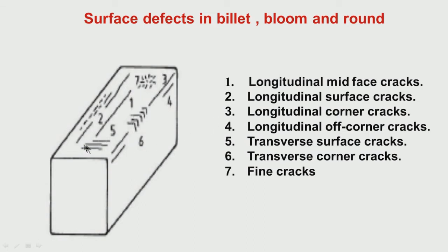Look at crack 5: what is the direction? If 1 was longitudinal, 5 is transverse — it is perpendicular, at about 90 degrees to the longitudinal direction. The longitudinal direction is the direction of casting; the transverse direction is perpendicular to it. So crack 5 is called a transverse surface crack — it is on the surface but at transverse direction. Look at crack 6: these are also transverse direction cracks but at the corner. So we call them transverse corner cracks.